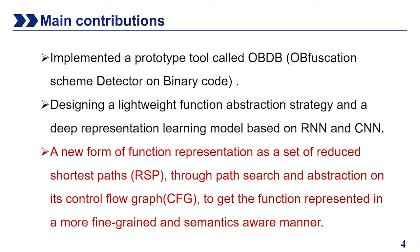According to the above questions, this paper has three main contributions. First, implementation of a prototype tool called OBDB, an obfuscation scheme detector on binary code. Second, designing a lightweight function structure strategy and depth representation learning model based on RNN and CNN. Third, a new function representation as a set of reduced shortest paths, RSP, through path search and abstraction on the control flow graph, to get the function represented in a normalized grid form.